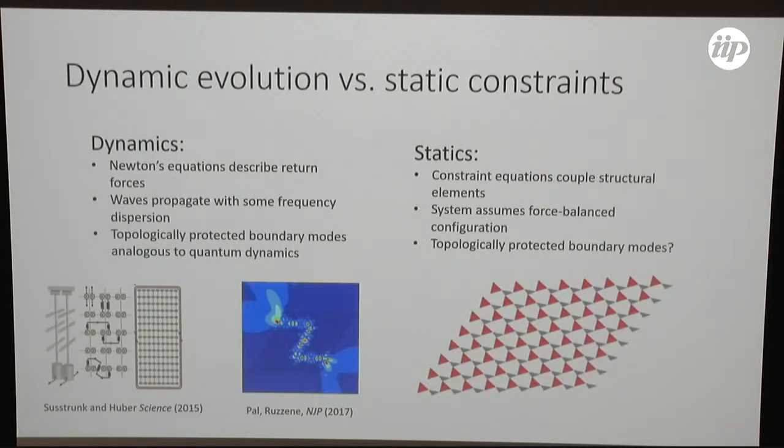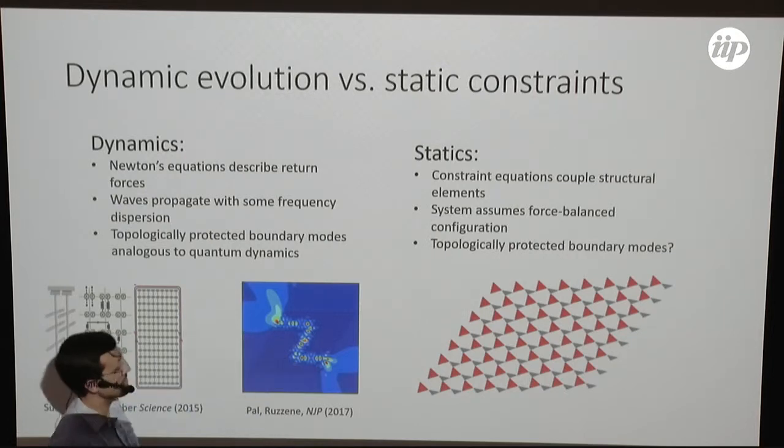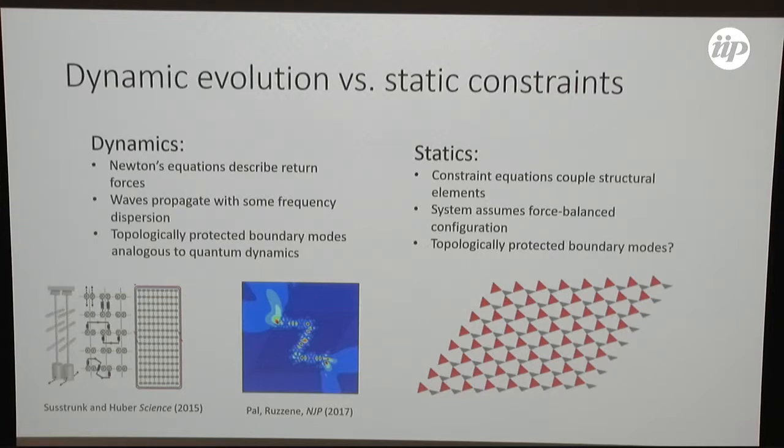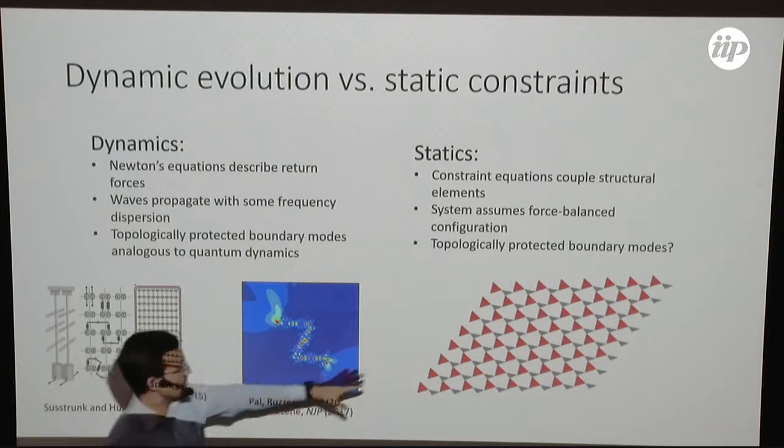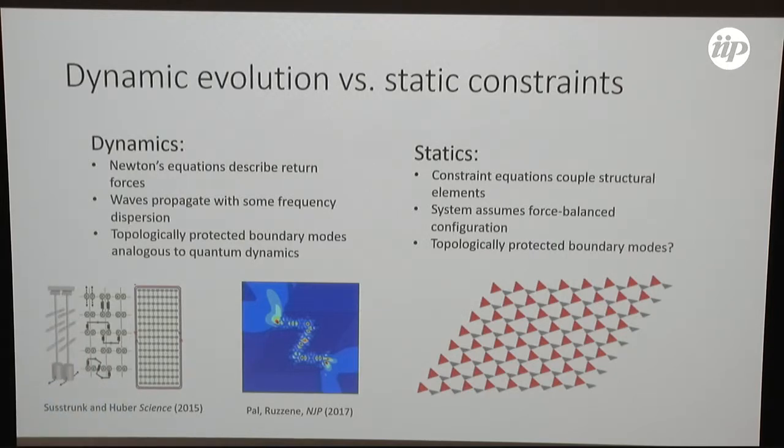A brief contrast between dynamics and statics. What I'm talking about today is statics. In dynamics, we have Newton's equations of motion that describe how, if I give you a set of displacements and deformations, you can give me the return forces. That often leads to wave propagation, which can lead to topologically protected boundary modes. This is an interface between two topologically distinct parts of a structure, and you have a mode that can go around corners without backscattering or localizing. In statics, I want to talk about a system that is constrained in some way. I have mechanical constraints where these triangles have to share corners as if they're connected by hinges. I'm going to let my system relax to a force-balanced static configuration. It turns out we can still have topologically protected boundary modes.